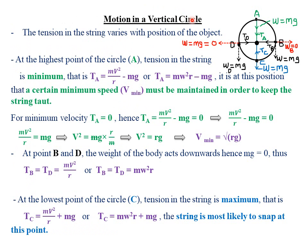Next, we look at motion in a vertical circle. Imagine a stone tied on a string being whirled in a vertical circle from point A to point B to point C to point D and back to point A. The center of rotation is where you hold the string, and the radius equals the length of the string. The tension in the string varies depending on the position of the object.